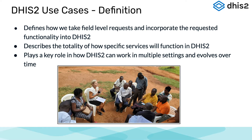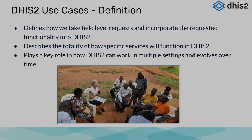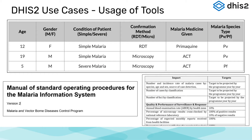The ability of DHIS-2 to be adapted to meet the needs of different use cases is a key part of DHIS-2's ability to work in so many settings, evolving over time. Use cases allow us to understand the need for capturing specific data items, such as data elements associated with a malaria patient, and how to configure DHIS-2 to use the information captured so that it supports an organization's goals, such as reporting and testing targets.